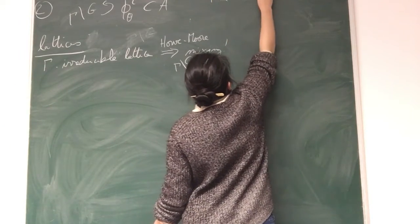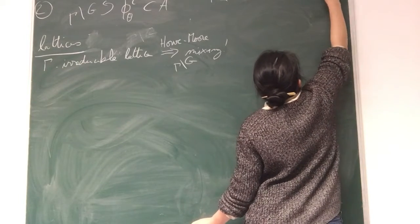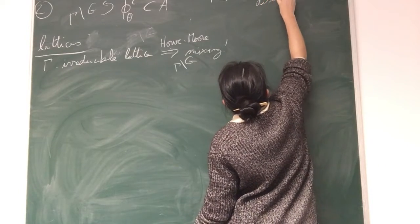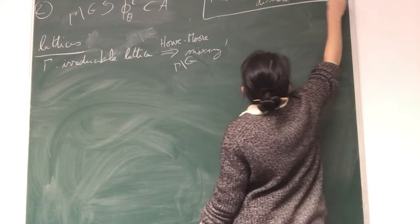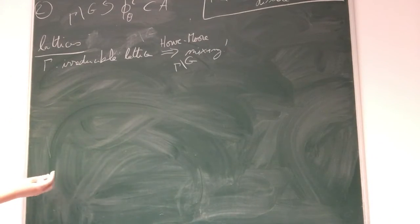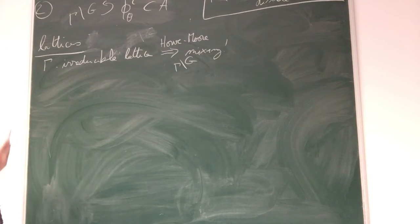So the natural question is what happens for smaller gammas. Let's say my main assumption: gamma is Zariski dense, meaning that if I have a family of polynomials that cancel gamma, they also cancel G.